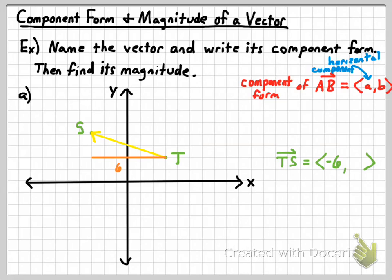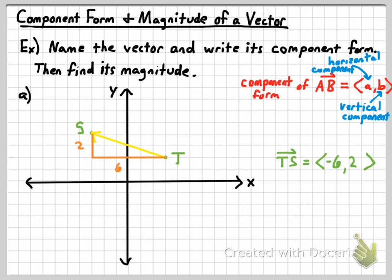Then B describes the vertical component, which tells you the vertical change from the initial point to the terminal point. Vertically, to get from T to S, we go up two units. Whenever you're discussing the vertical component, positive means up and negative means down. Since we went up, this vector has a positive two for its vertical component. So there's the component form for the vector.